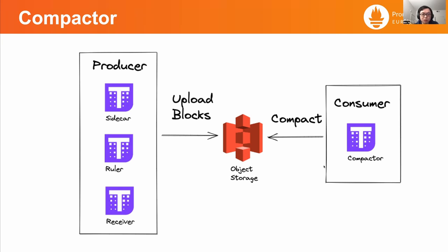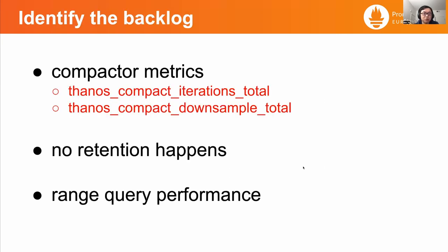The key thing here is to identify the backlog issue, and there are several ways to go. The compactor itself exposes some very useful metrics. These two metrics tell us the current iterations and the downsamplings performed. If these two counters remain the same value or increase slowly, then backlog might be occurring. And if you don't see any retention happening for very old blocks, then the compactor might be busy compacting blocks and unable to start downsampling or retention.